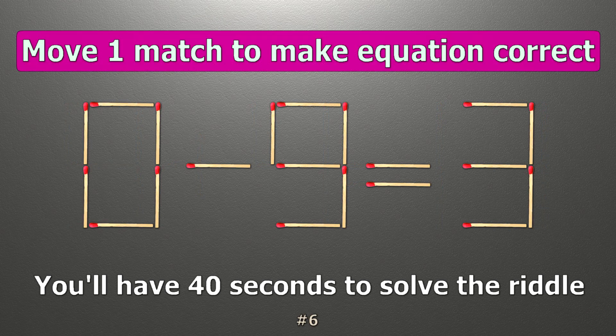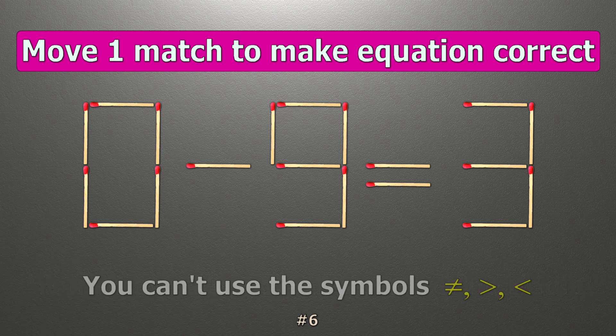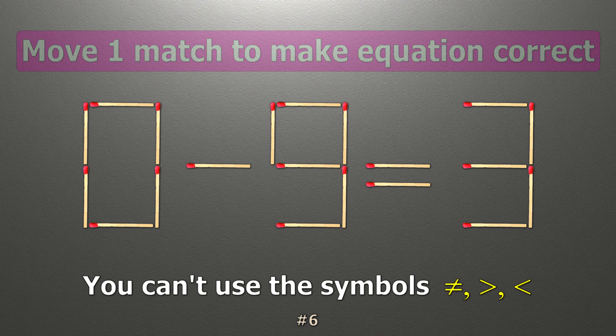We have the equality 0 minus 9 equals 3. Our equality is wrong. We need to move one match to make our equality correct.